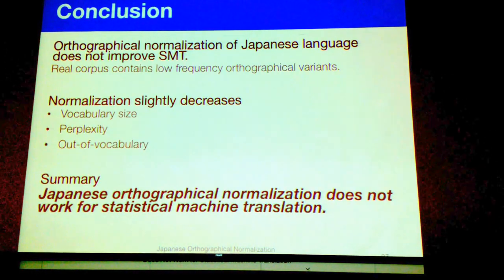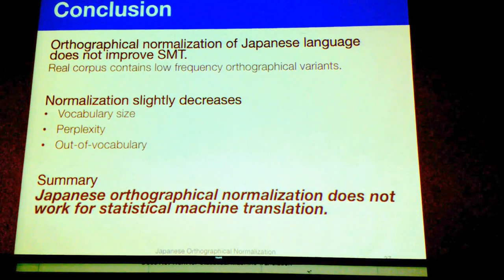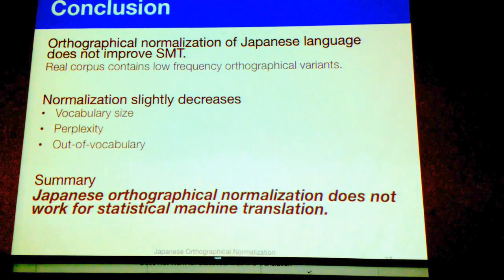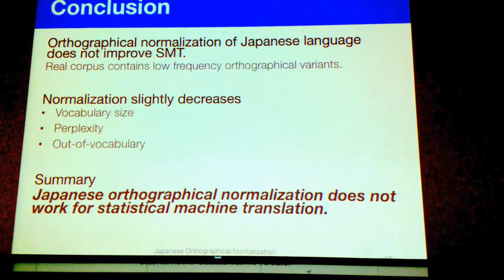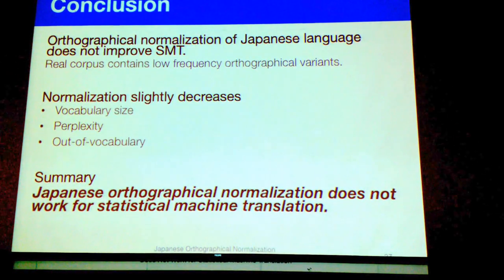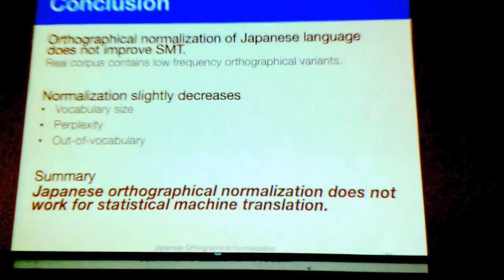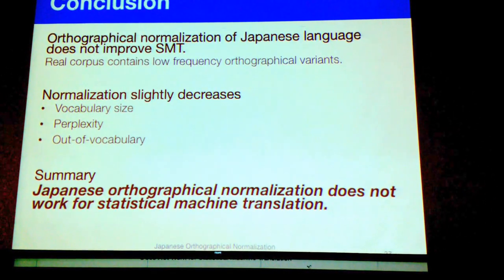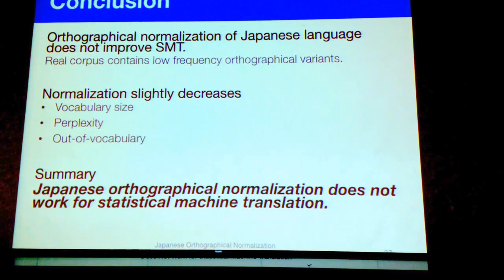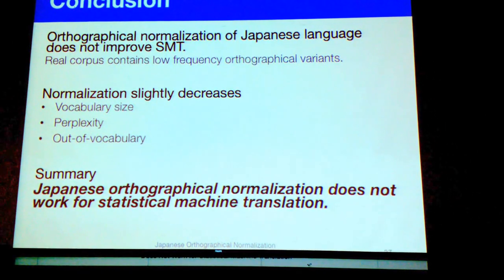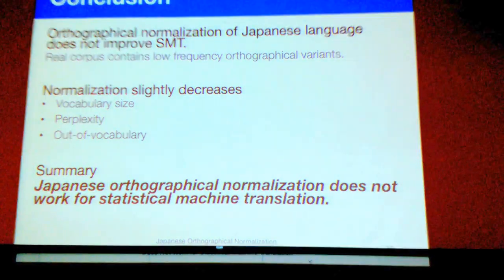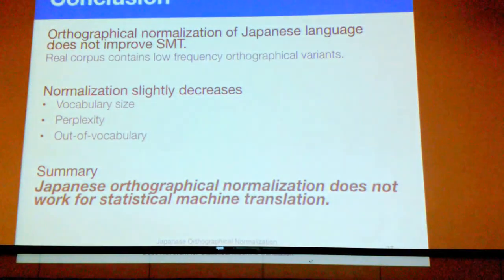To conclude: orthographical normalization of Japanese does not improve SMT because real corpora contain only low-frequency orthographical variants. However, normalization slightly decreases vocabulary size, perplexity, and out-of-vocabulary rate. To summarize: Japanese orthographical normalization does not work for statistical machine translation.